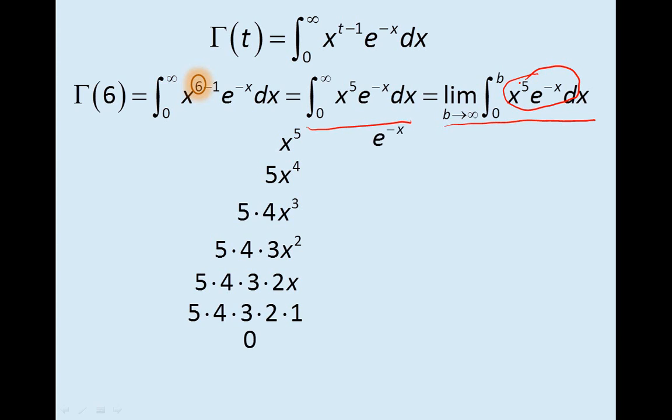Then, I take the other part, the e to the negative x, and I find the antiderivative of that. So, the antiderivative of e to the negative x is negative e to the negative x. The antiderivative of that, e to the negative x, and so forth. And I keep going until I'm lined up with the 0. Then, I draw my diagonals and alternate signs.